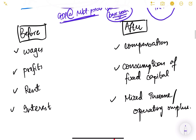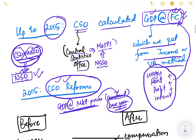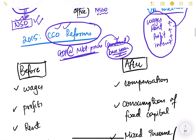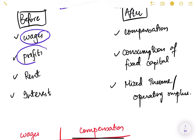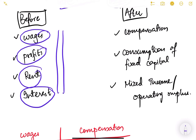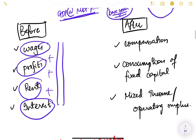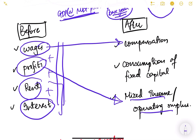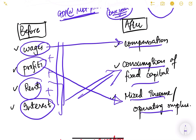Let us look at what were these 2015 reforms. Before 2015, we calculated GDP at factor cost, looking at wages, profits, rent, and interest — a very rudimentary kind of estimation. After the reforms, wages were changed to compensation, profits were changed to mixed income or operating surplus, and rent and interest were changed to consumption of fixed capital.